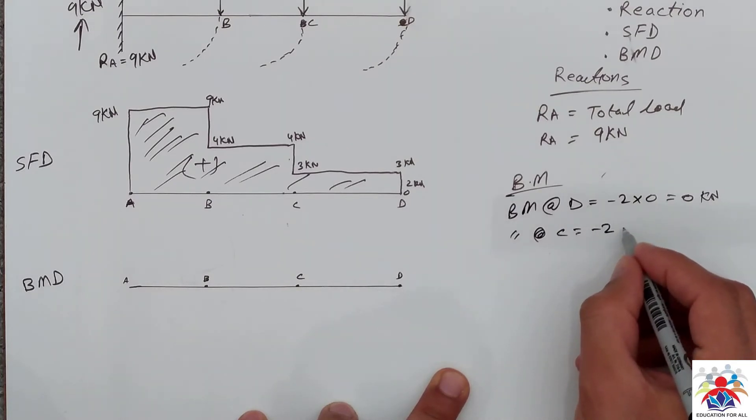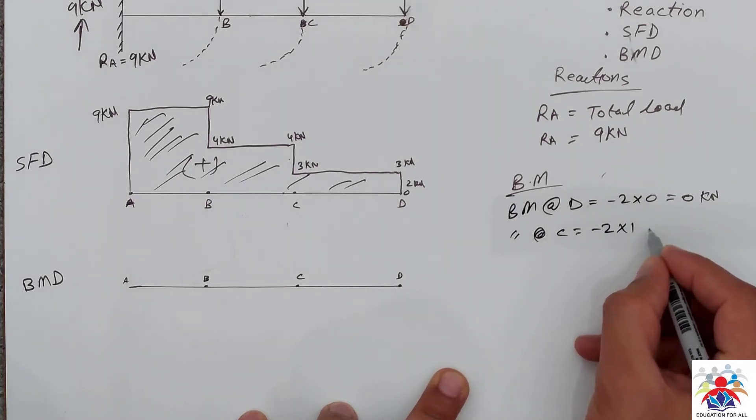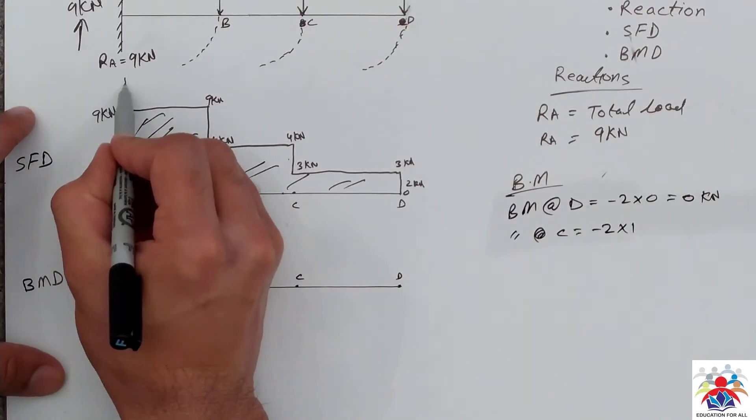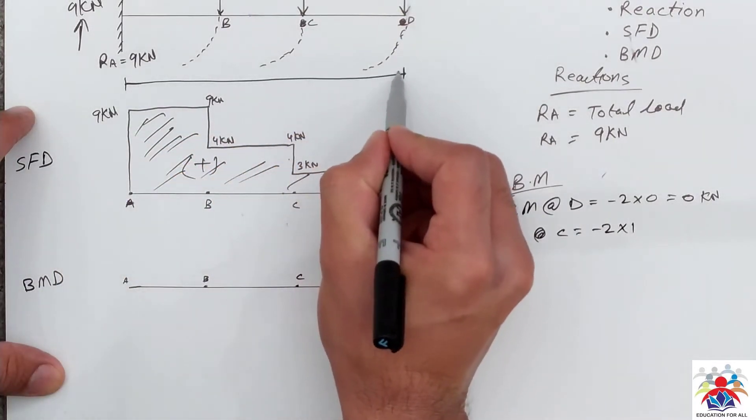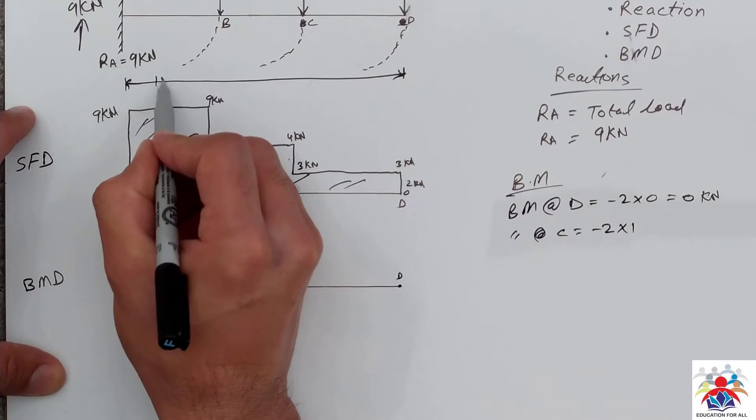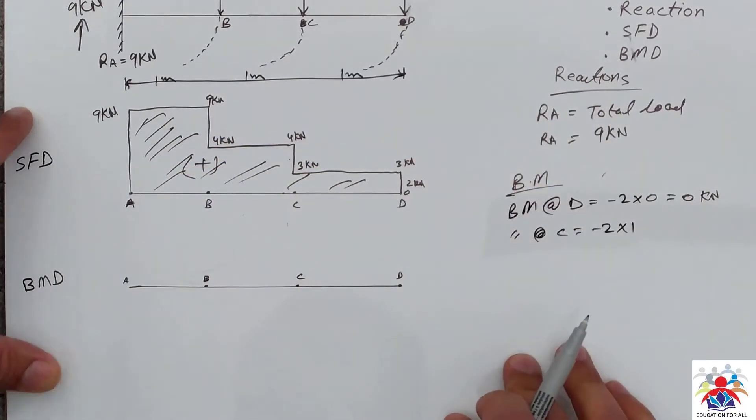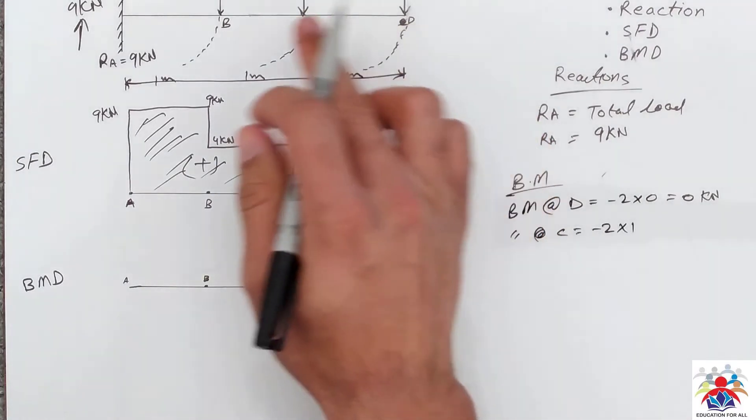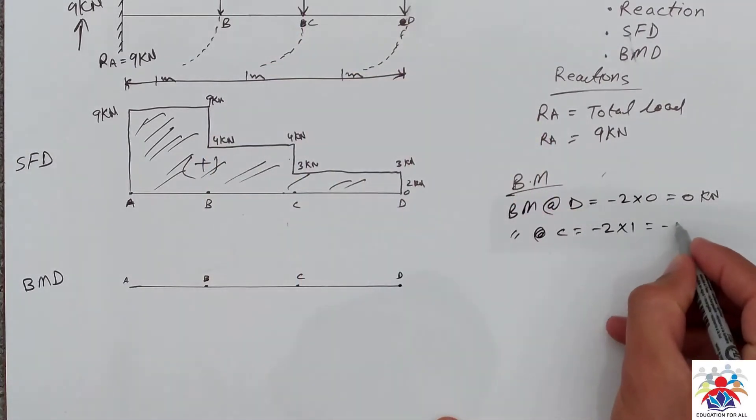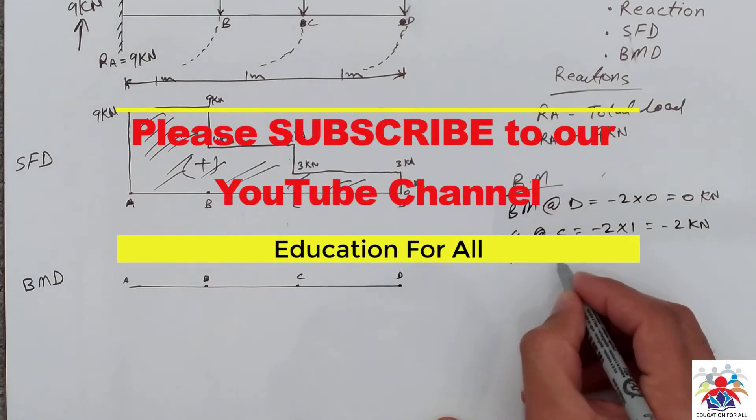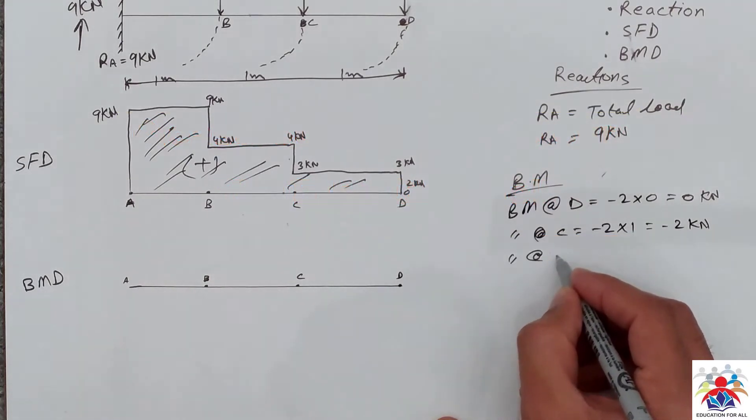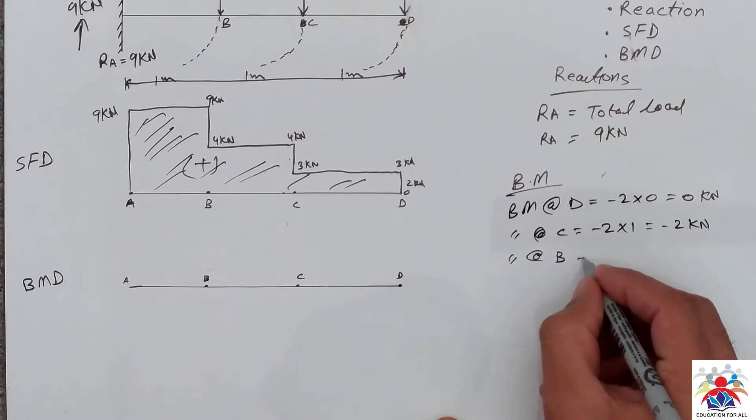Minus 2 multiply by 1. I forgot to write the distance of the beam, so it's 1 meter each. Minus 2 multiply by 1 will be minus 2 kilonewtons. Bending moment at point B, so it'll be: